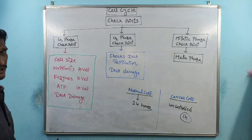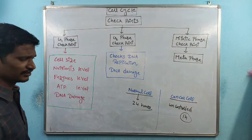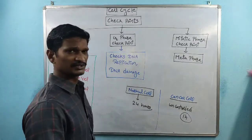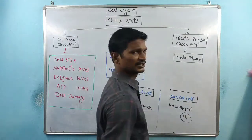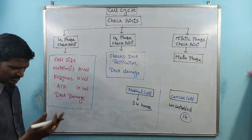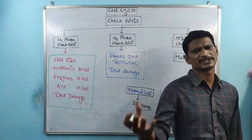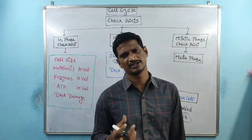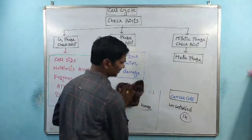If cell division occurs in a regulated manner, the cell undergoes normal cell division. If the cell involves uncontrolled cell division, that is called a cancer cell. During cell division, we know there are G1 phase, S phase, G2 phase, and the mitotic phase. At which phases are the checkpoints present? Let me discuss with a diagrammatic representation.